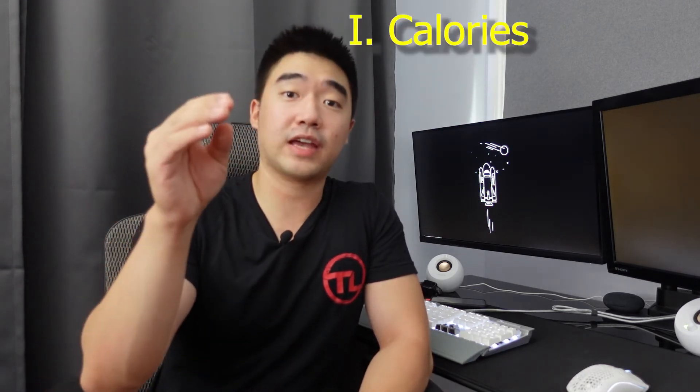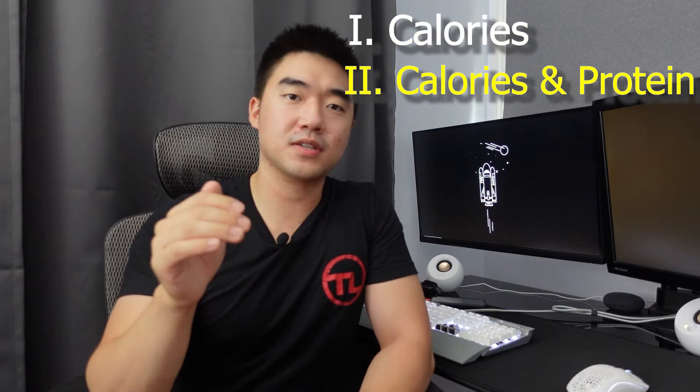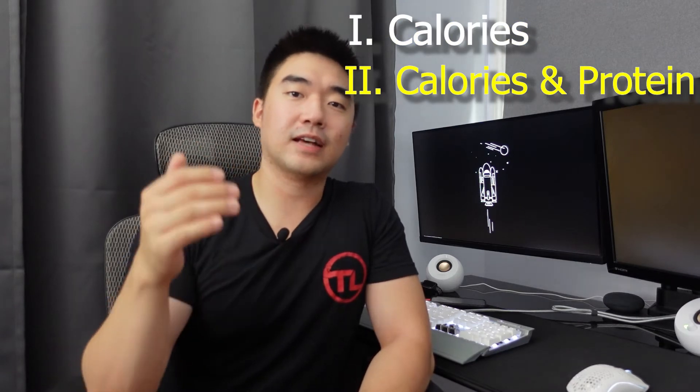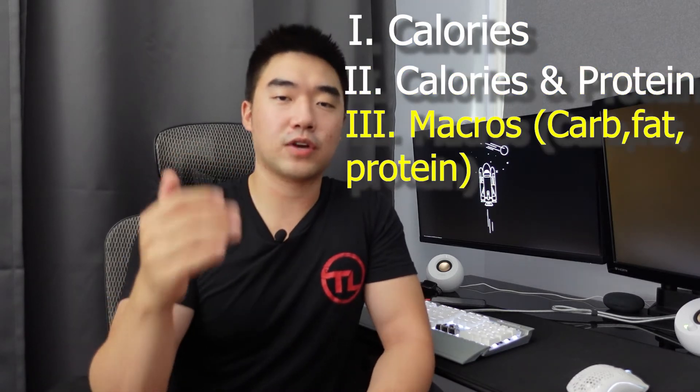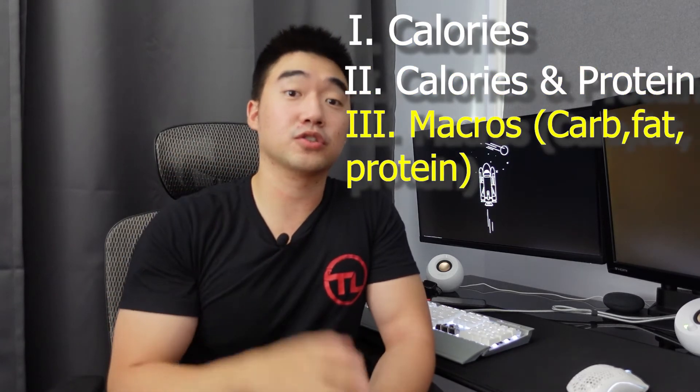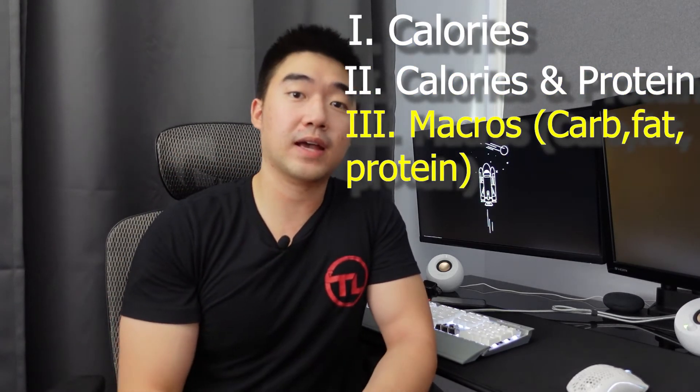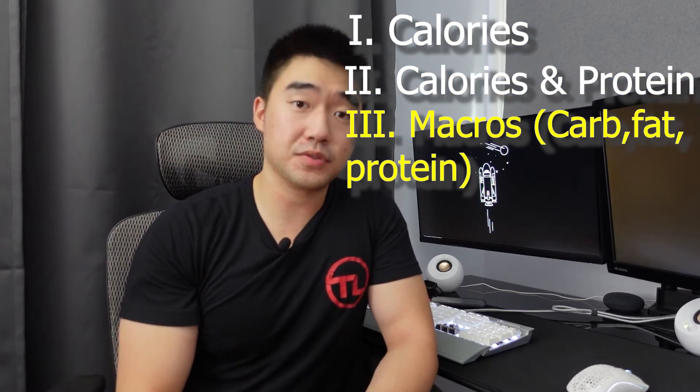Before I get into how you can calculate your calories and your macros, I'm going to go over the three tiers of tracking. The first tier is just tracking your calories, then you have tracking your calories and your protein, and then the last one is tracking your macros — which is your carbs, fat and your protein.